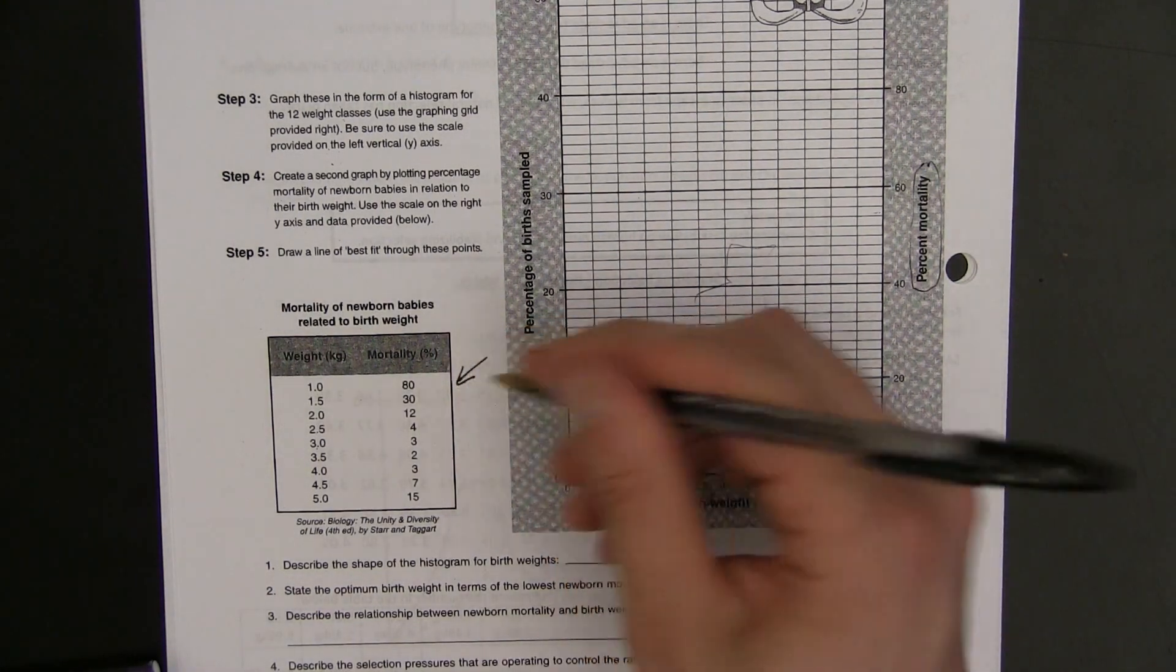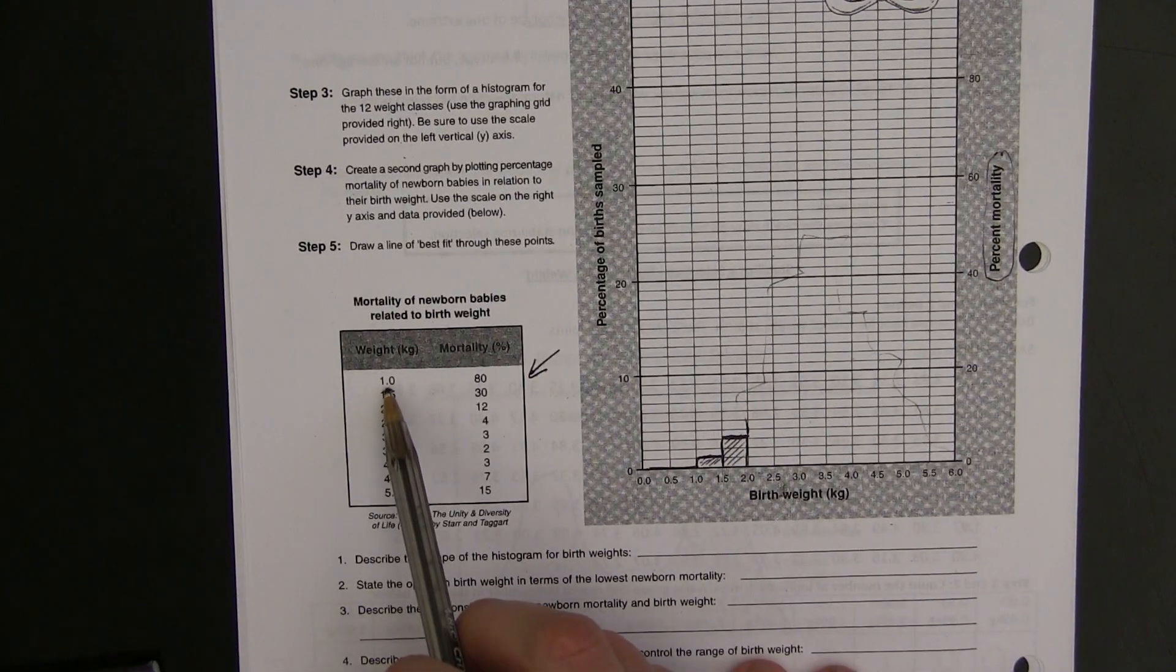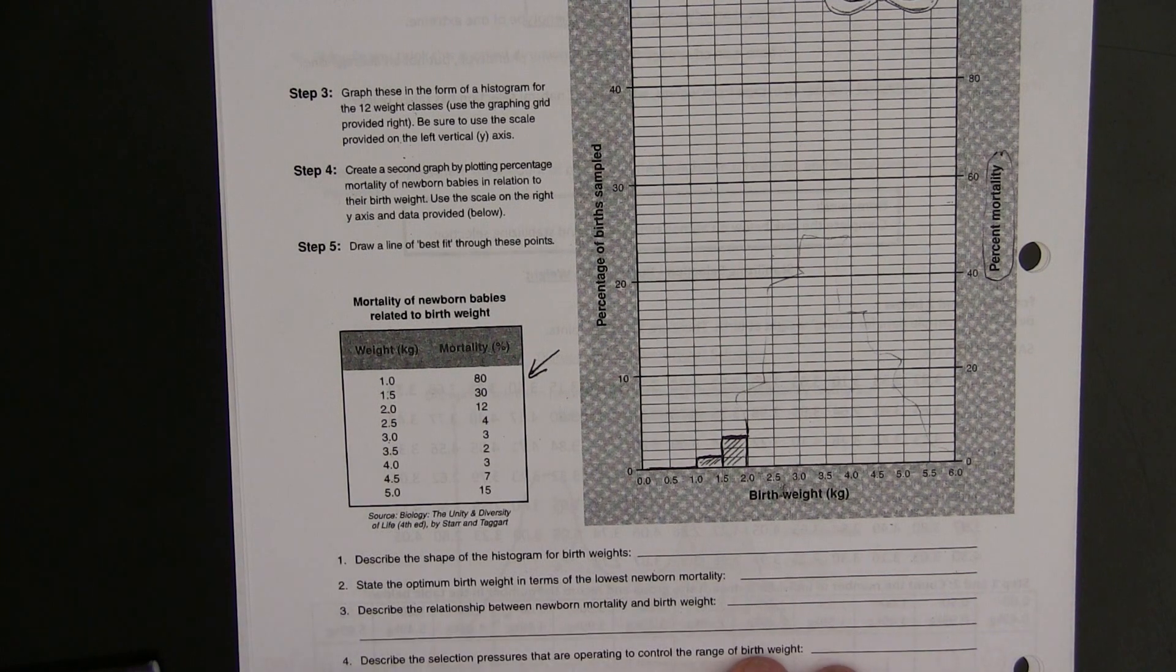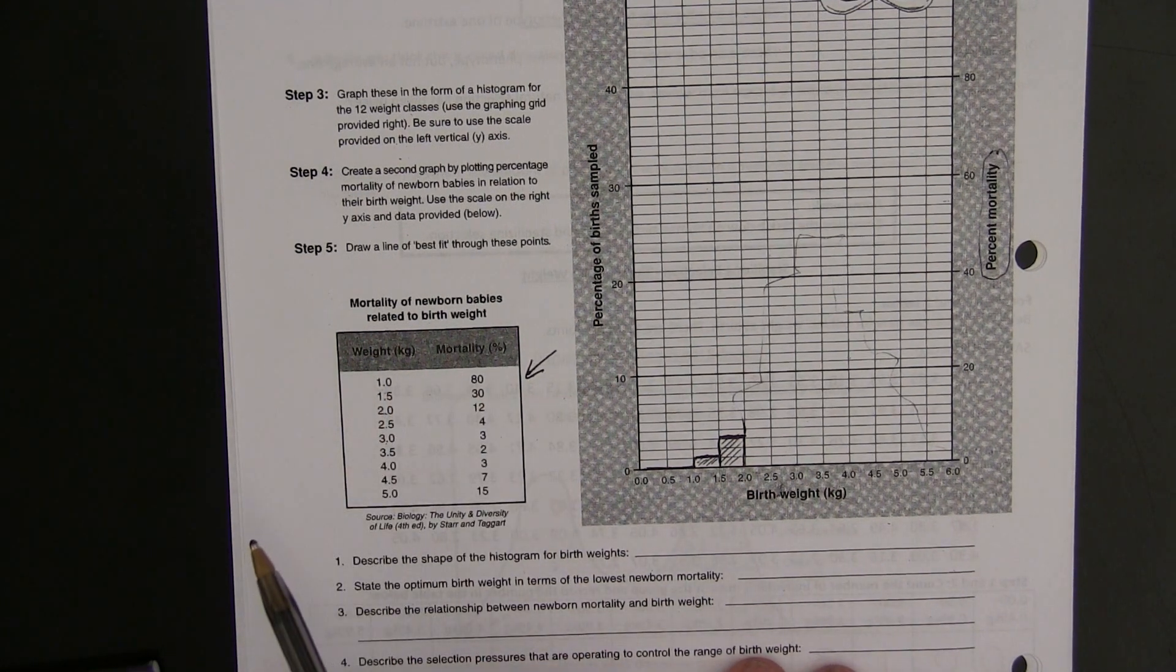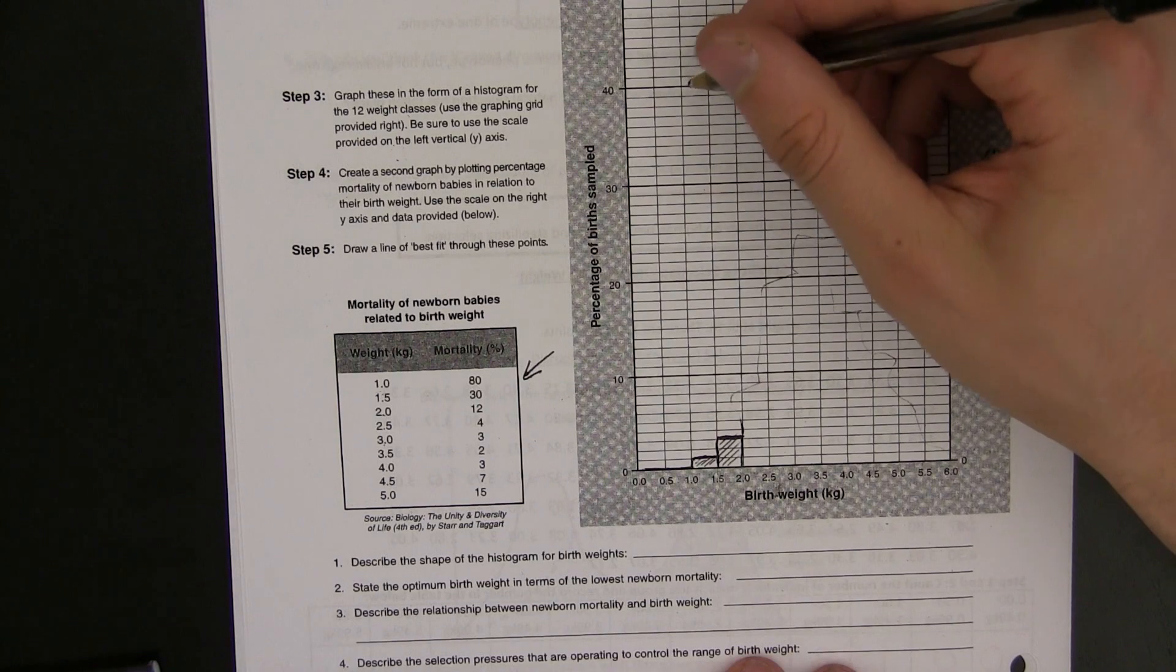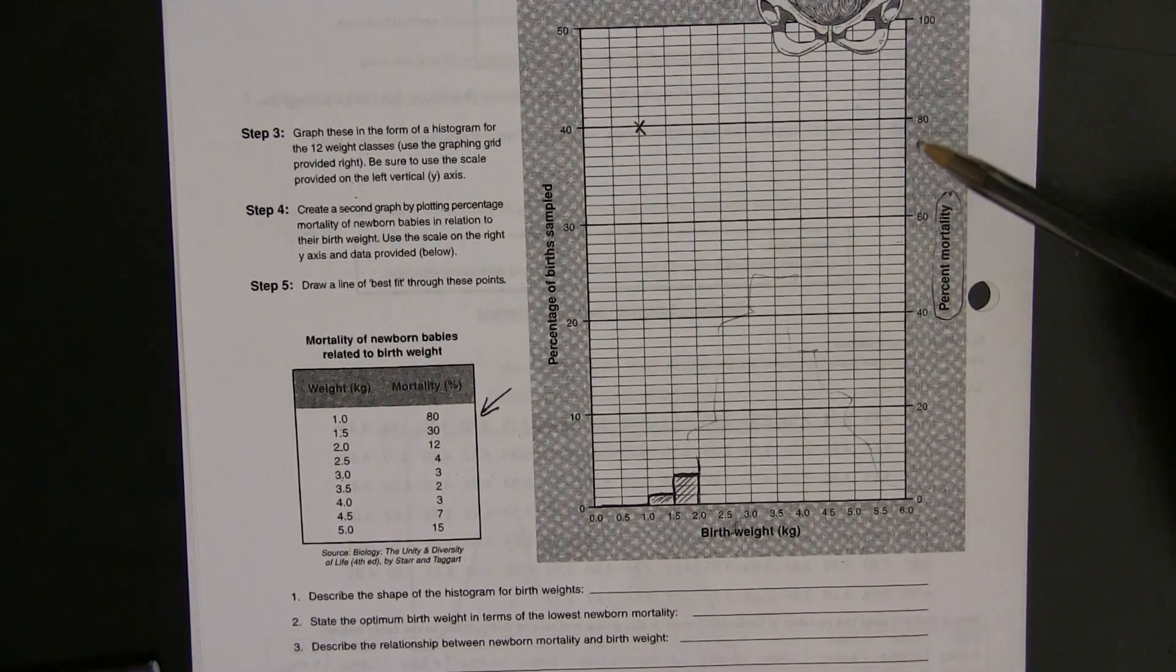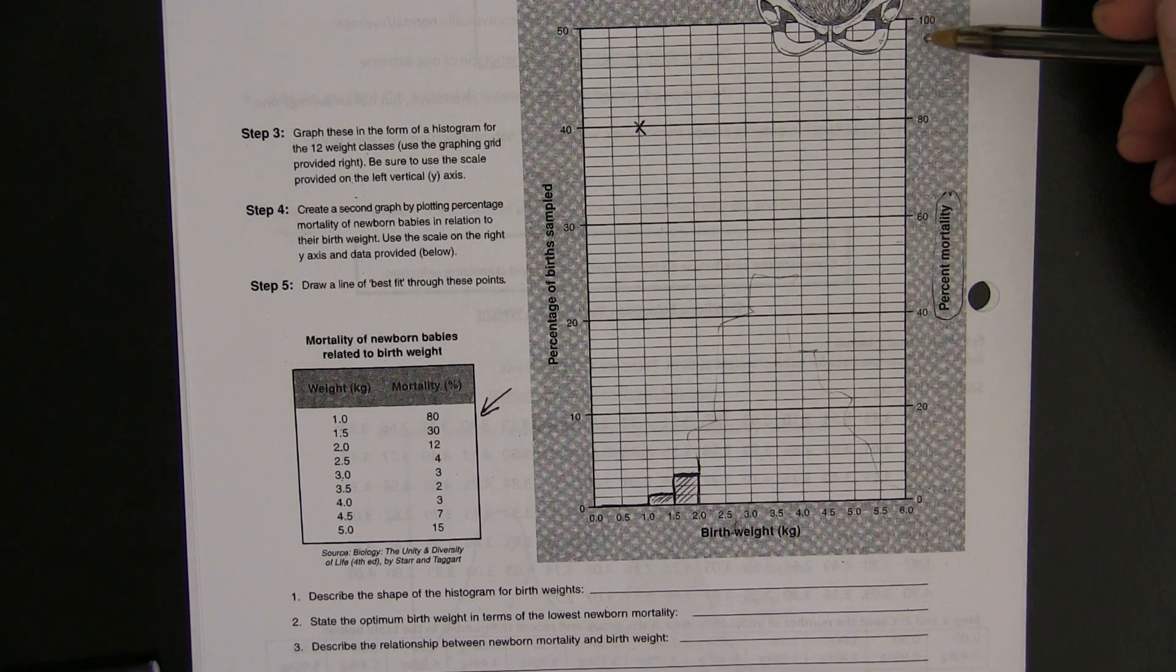When I look in this table, I see that babies of one kilogram have a mortality rate of 80%. That means that 80% of babies that are that light die. Therefore, what you need to do is to put a single check mark right here because we're working off this y-axis on this side now.